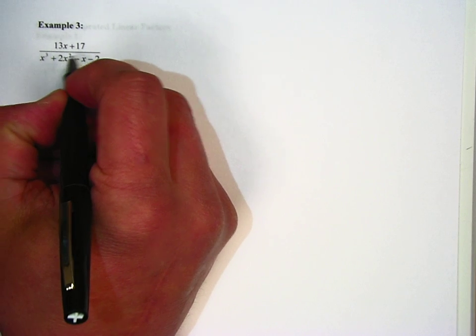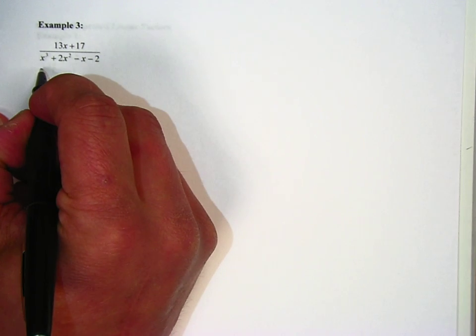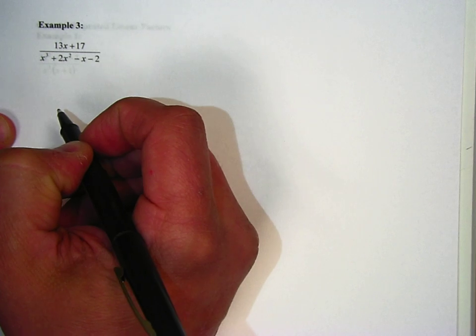So here's our third and final example with distinct linear factors. This is 13x plus 17 over x cubed plus 2x squared minus x minus 2.